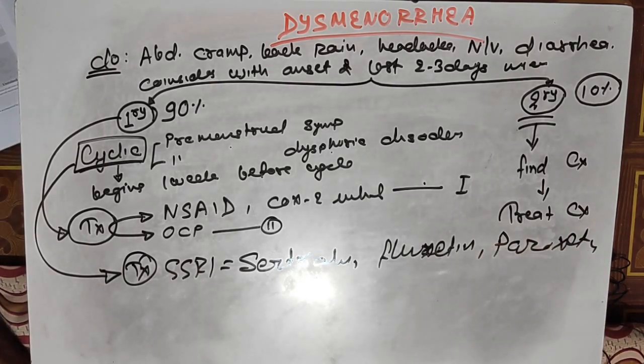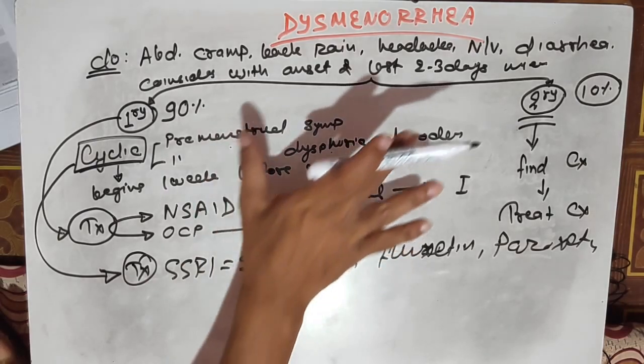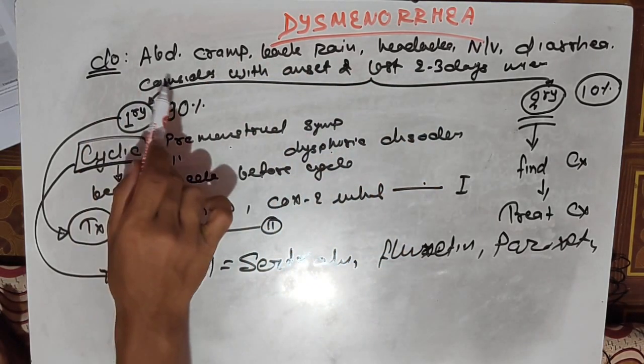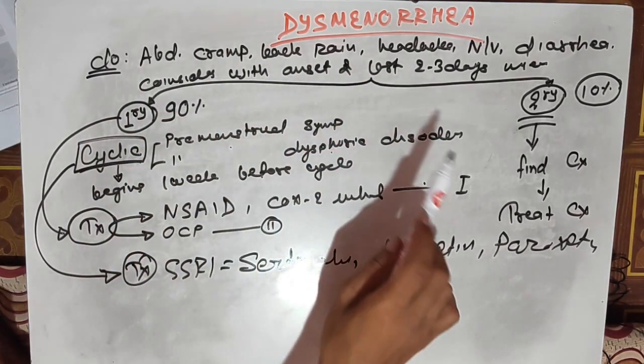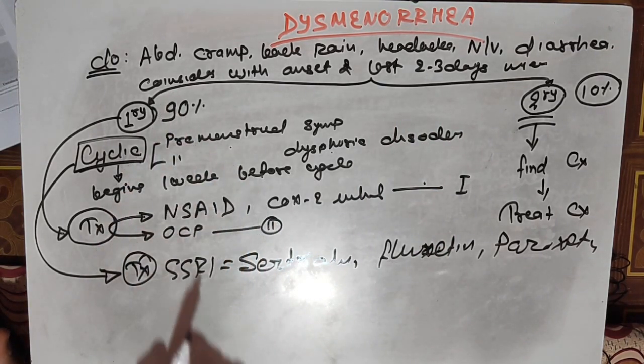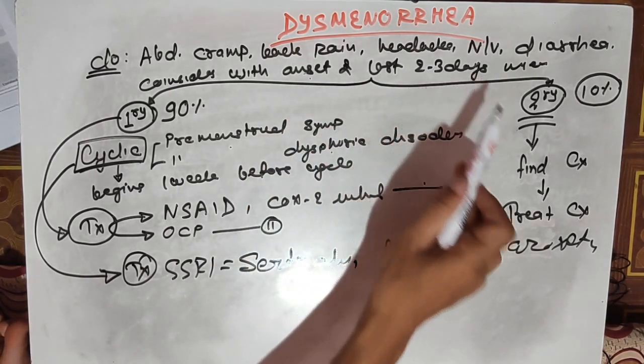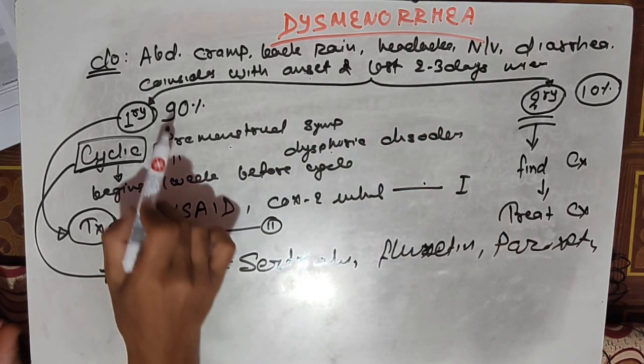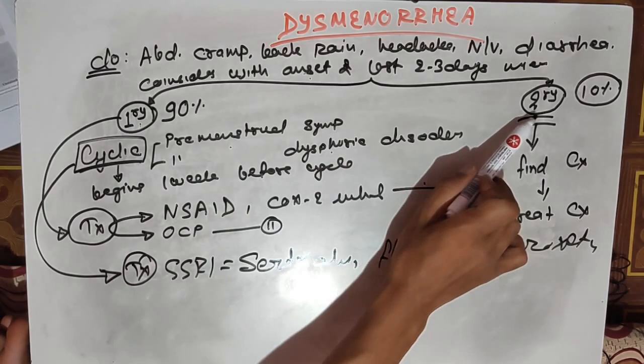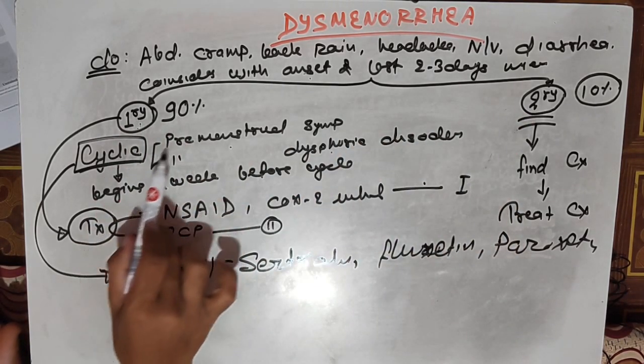To summarize, dysmenorrhea is painful menstruation. Patients can present with abdominal cramps, back pain, headache, nausea, vomiting, or diarrhea. It usually coincides with the onset of menstruation and may last for two to three days. It's divided into primary, which has no underlying cause,